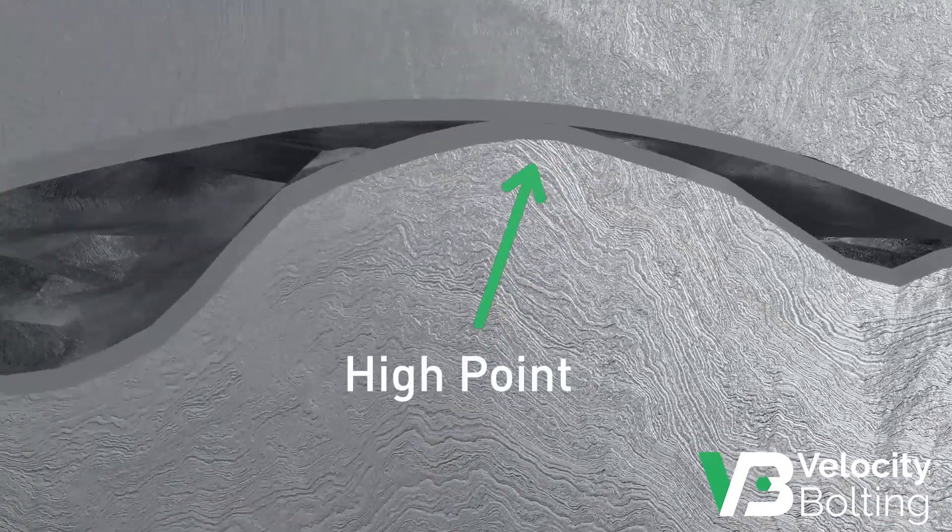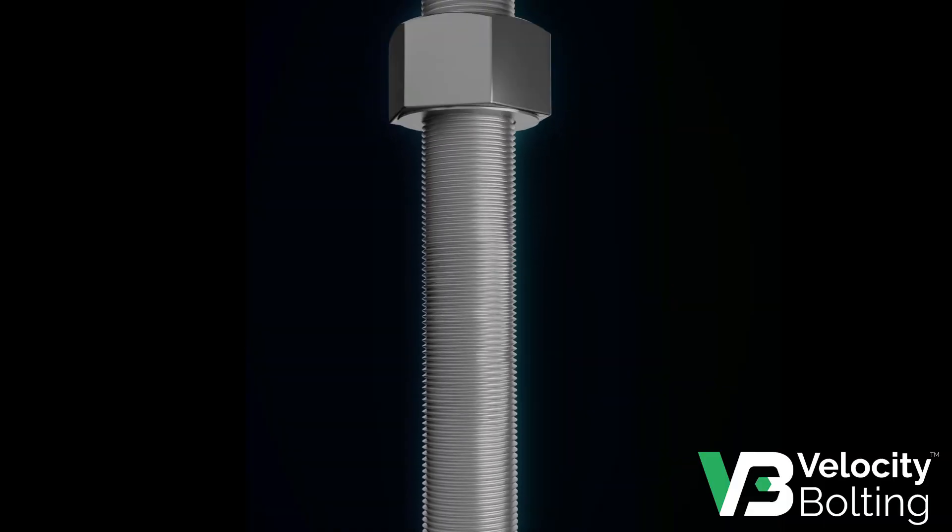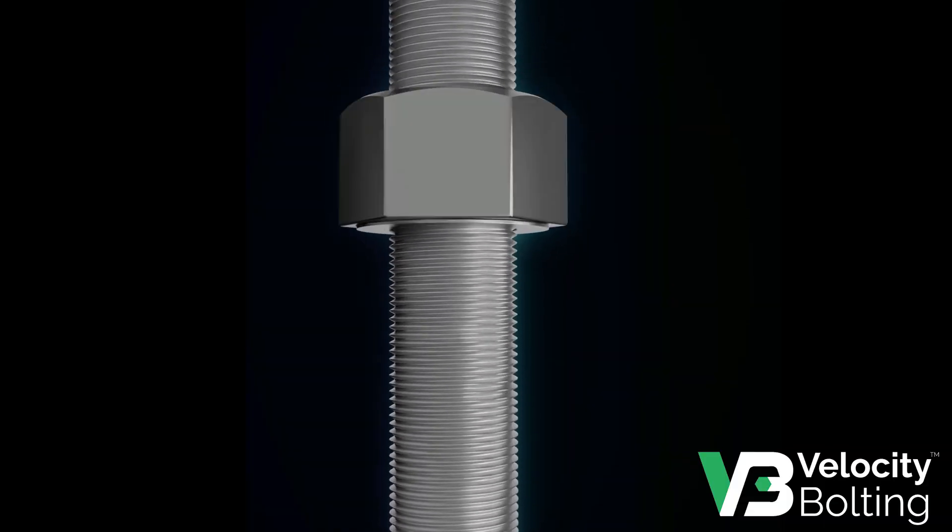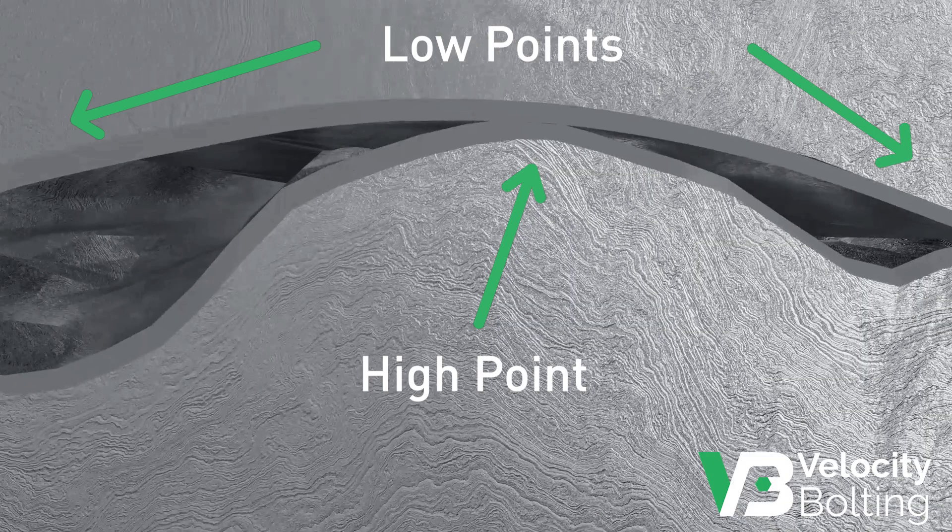The surfaces of the threads have high points and low points. When a nut is turned on a bolt, what looks like an evenly distributed load is concentrated on these high points, or asperities, creating areas of tremendous localized stress.